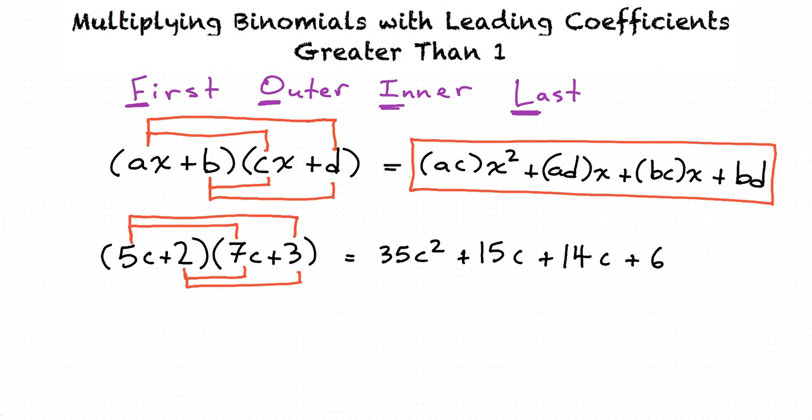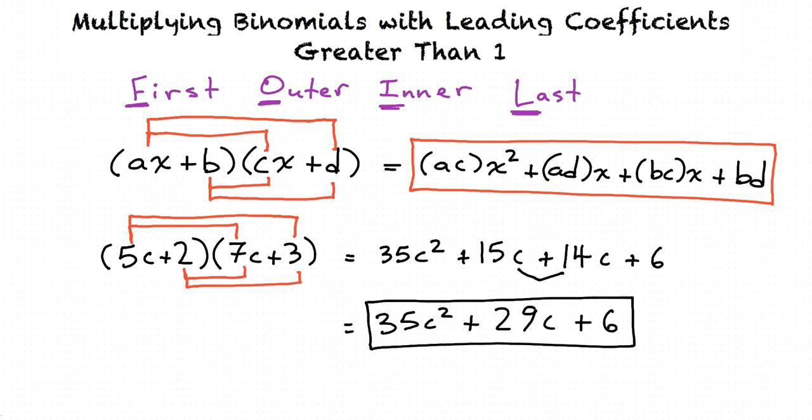This is the correct answer, but we should simplify it more. By adding 15c and 14c, we simplify the answer to 35c squared plus 29c plus 6.